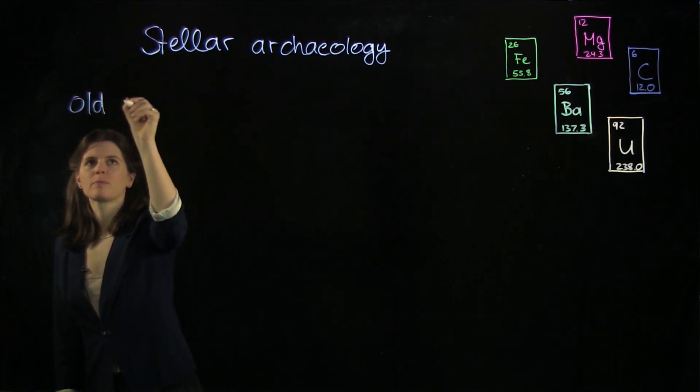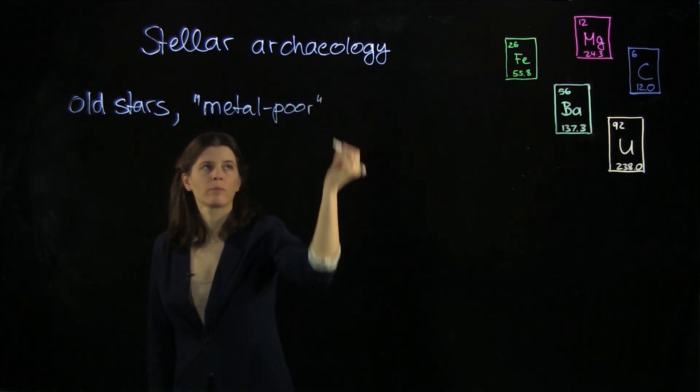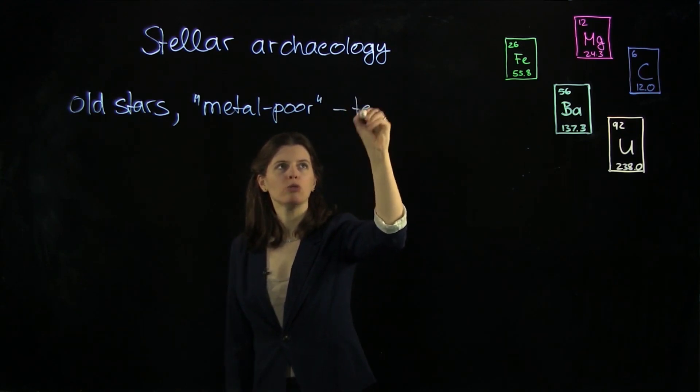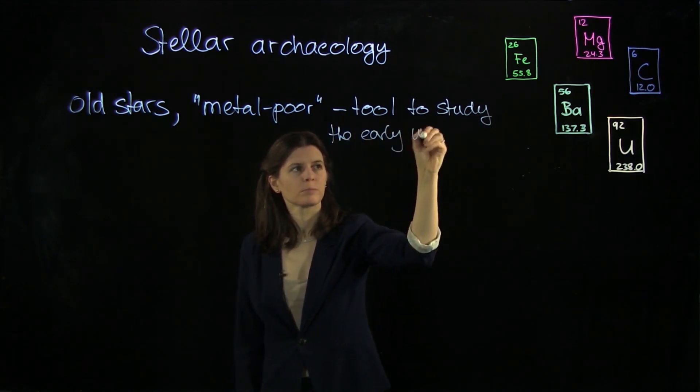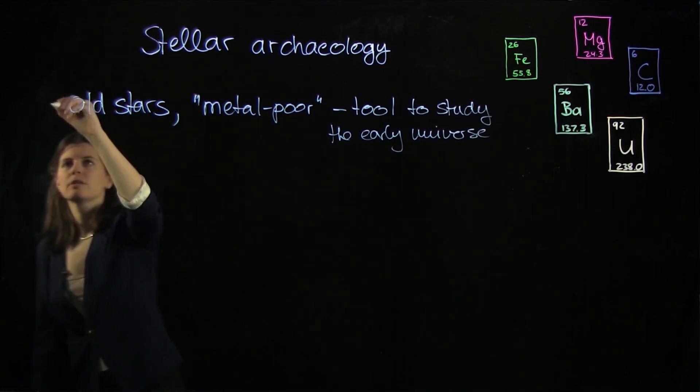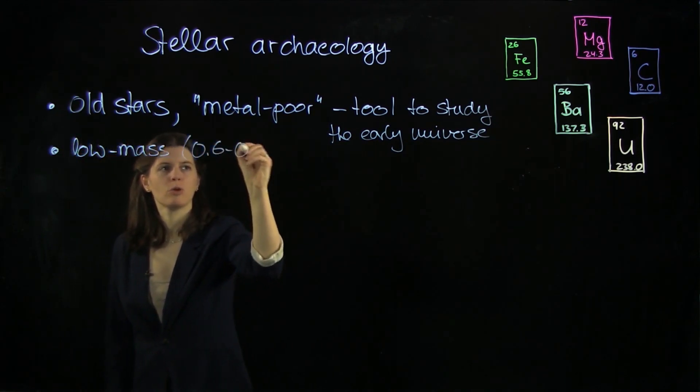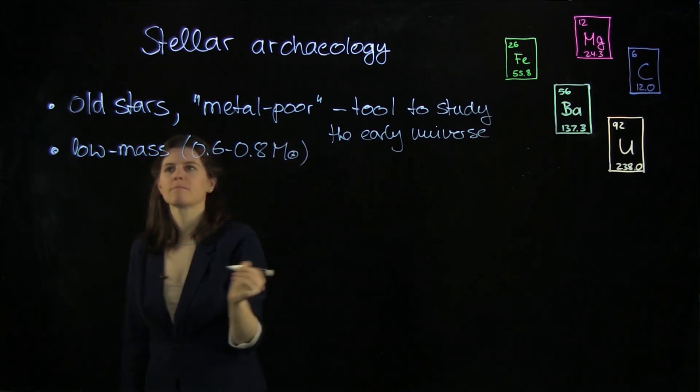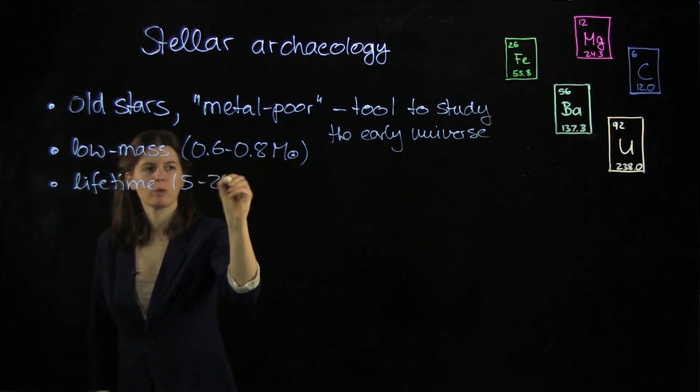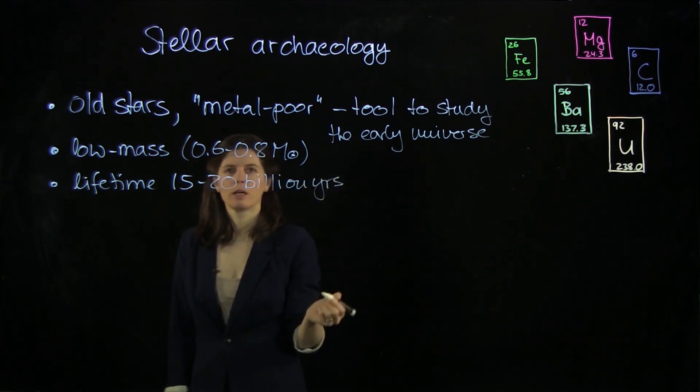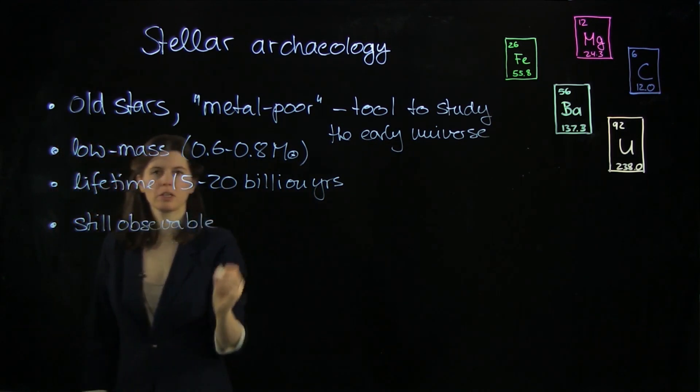So we have old stars and we call them metal poor, and they are our tool to study the early universe. These stars are long-lived, so they have a low mass, something like 0.6 to 0.8 solar masses, and that means they have lifetimes of 15 to 20 billion years, and that means that they are still observable, and that is very lucky for us.